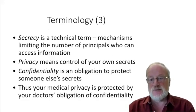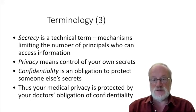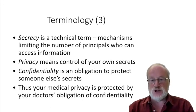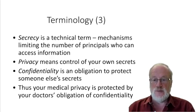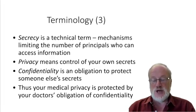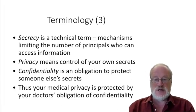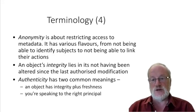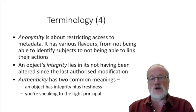Secrecy is a technical term meaning mechanisms that limit the number of principals who can access information — examples are cryptography and access controls. Privacy is a more human-oriented term meaning control of your own secrets, or informational self-determination. Confidentiality is more of a corporate term — an obligation to protect someone else's secrets. For example, a doctor has an obligation of confidentiality as part of their employment contract, protecting your medical privacy, though the doctor's relationship with the patient and with the hospital are two different things and can sometimes clash.